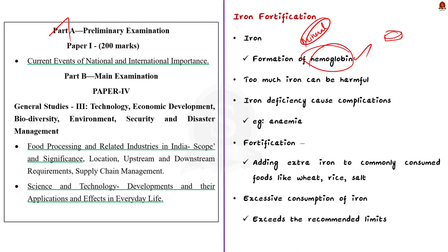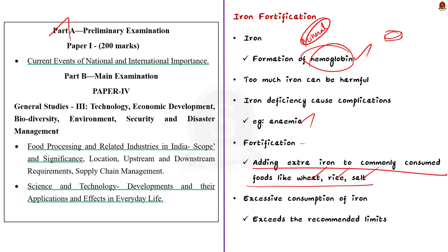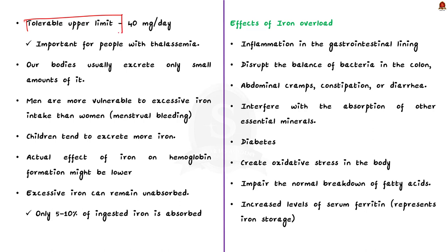Iron deficiency can cause many complications including anemia. One way to treat anemia is through fortifying food with iron. Fortification means adding extra iron to commonly consumed food like wheat, rice, or even salt. By doing this, we can provide a significant portion of the daily iron requirement for both men and women. This article says that excessive consumption of iron can occur when someone regularly consumes a balanced diet or exceeds the recommended limits for fortified food intake. To avoid the risk associated with excess iron, there is a defined level called the tolerable upper limit of intake, set at 40 mg per day.